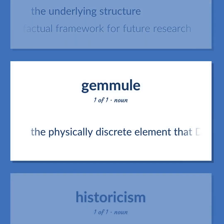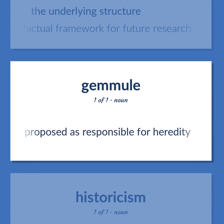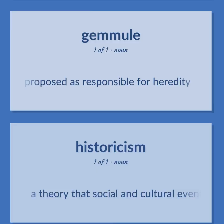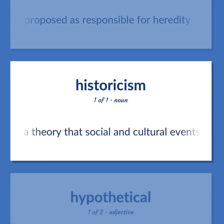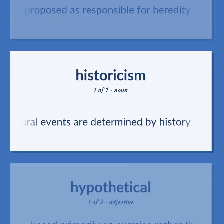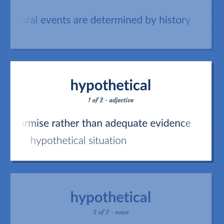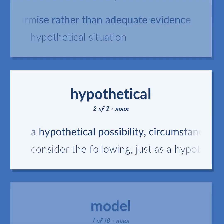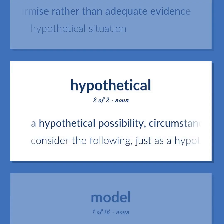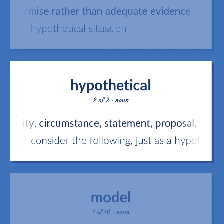The physically discrete element that Darwin proposed as responsible for heredity. A theory that social and cultural events are determined by history. Based primarily on surmise rather than adequate evidence. Hypothetical situation. A hypothetical possibility, circumstance, statement, proposal, situation, etc. — consider the following, just as a hypothetical.